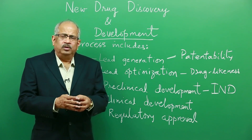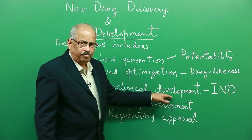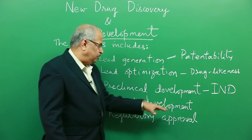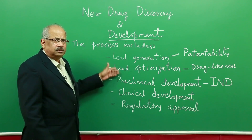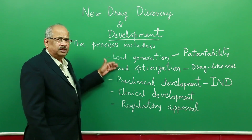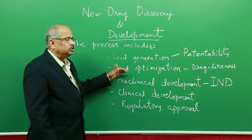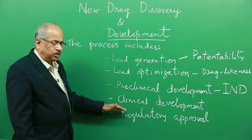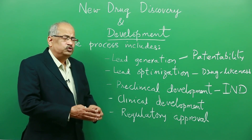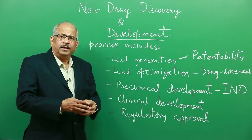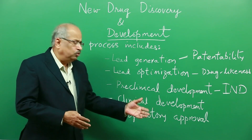What exactly 'developable' means is something I will discuss when we come to that point of preclinical development. The lead generation, lead optimization, and preclinical stages are not testing in humans — they are testing in the laboratory, in cell systems, and in biological systems like laboratory animals. From clinical development onwards, testing in humans starts. Regulatory approval is handled by authorities such as the Drug Controller General of India, CDSCO, or the U.S. FDA.